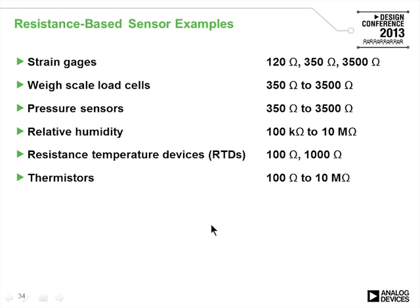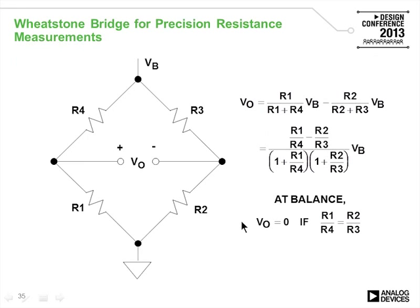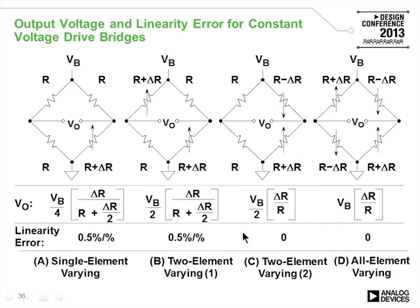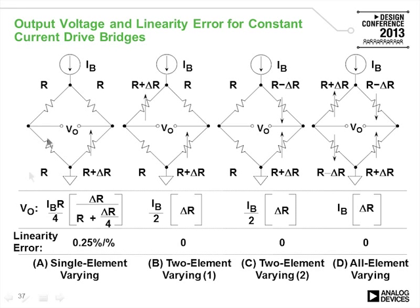Resistive-based sensors include strain gauges, load cells (combinations of strain gauges), and pressure sensors. The Wheatstone bridge is the standard approach for accurately measuring unknown resistance. Bridges can be driven with voltage or current, and can have single, dual, or quad varying elements, each with equations describing their nonlinearity. The concept of one, two, or four varying elements applies to both voltage and current drive configurations.